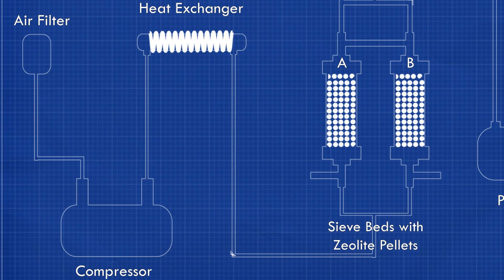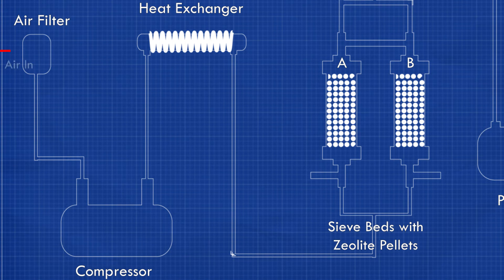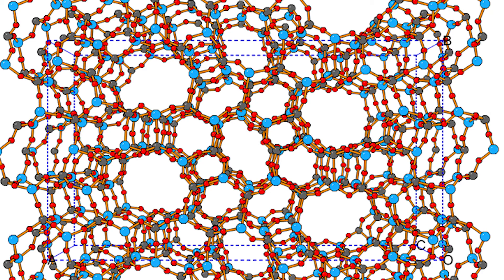First, the air filter filters out large impurities such as dust and pollen. This filtered air is passed to the compressor. The compressor compresses those gases to high pressures. This compressed air is then sent to the heat exchanger to cool down the hot compressed air. This air reaches one of two zeolite sieve beds.